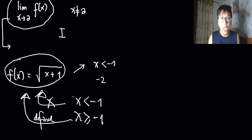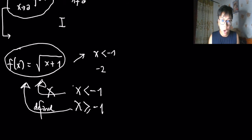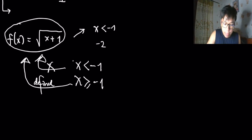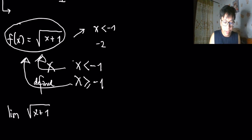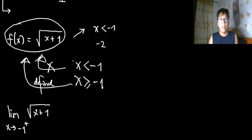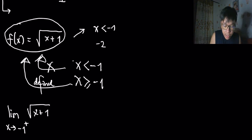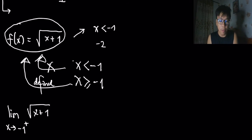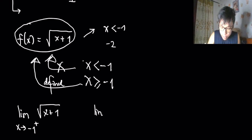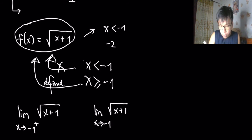In this case, we're only led to consider values at the right of negative 1. So if we're interested in the limit of √(x+1), we're only considering values approaching -1 from the right. This is an example of a one-sided limit — we only consider values from the right of -1, and we use a plus symbol to indicate the right side.